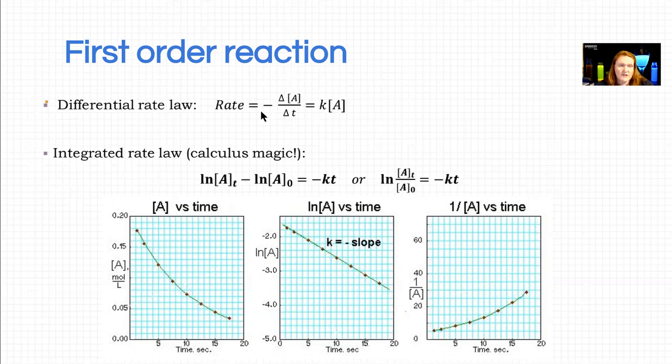So first order reactions. The first definition of a rate law is called the differential rate law, because it's a difference, right? Delta A over delta T. And as it turns out, if it's first order, the rate is equal to your constant K. This is different for each reaction, but it's within the same reaction is going to be constant. Times the concentration of the reactant raised to the power of one, which we often don't even bother to write.